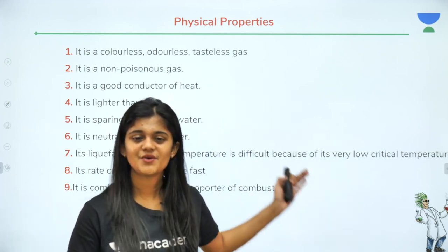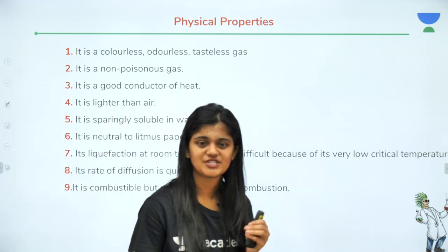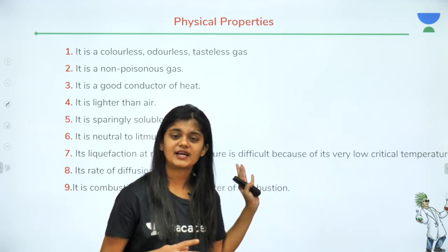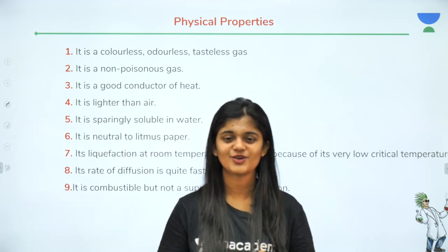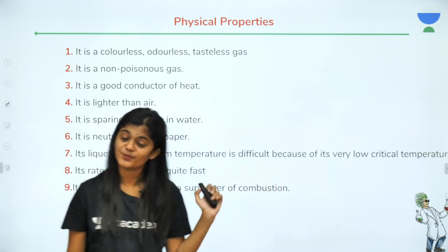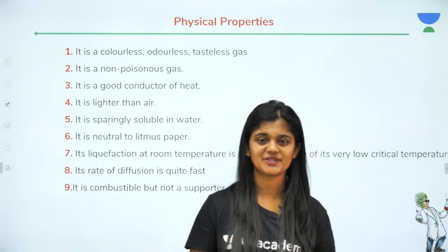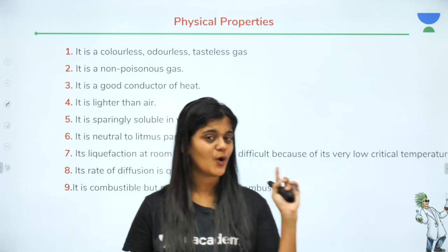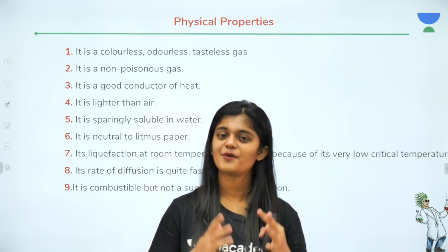Now the physical properties of hydrogen — there are nine points to remember. All students from 9th to 12th standard need to know these. First: it is a colorless, odorless, tasteless gas — its fumes are colorless. Second: it is non-poisonous. That is why we are planning to use it in hydrogen fuel cells as a next-generation fuel, because it is non-poisonous and greener compared to fossil fuels.